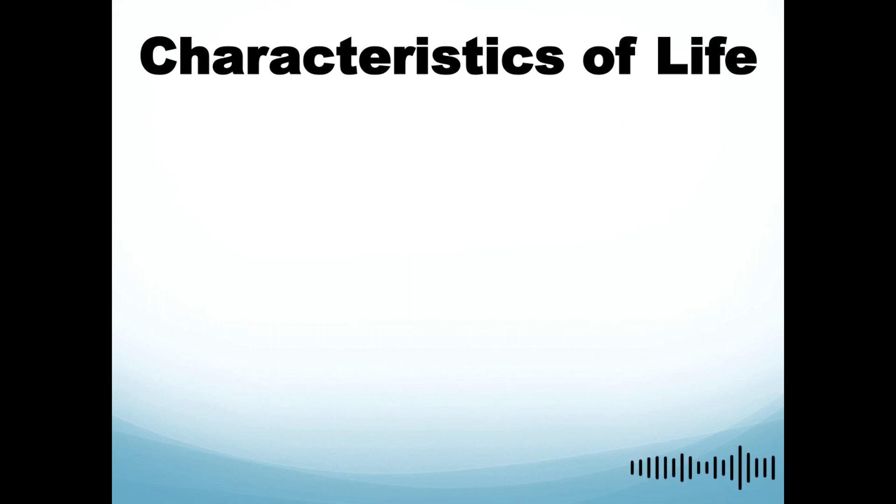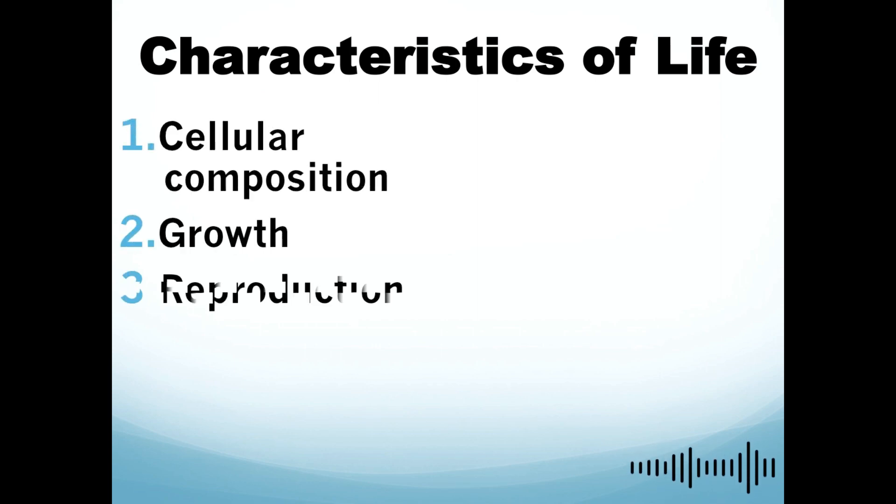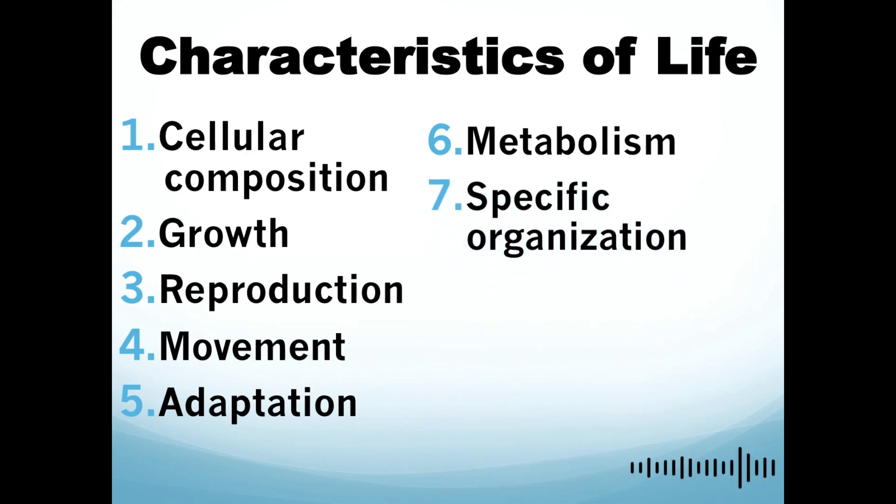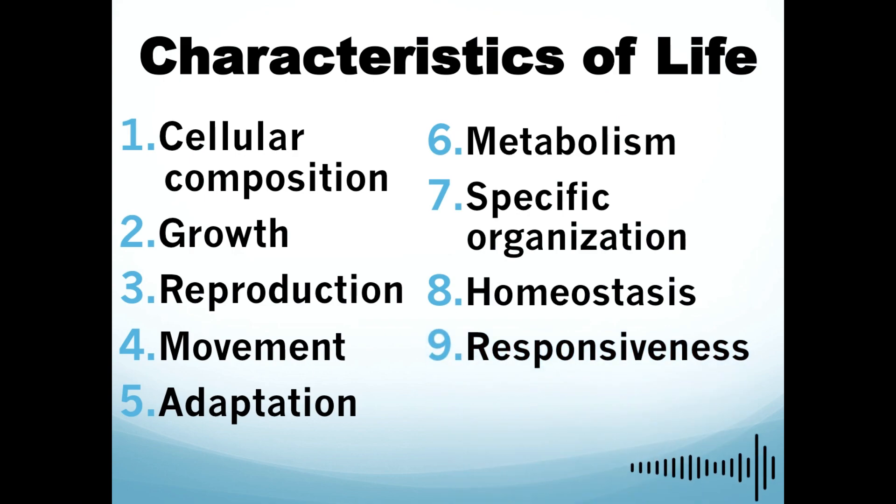Now let's proceed to some of the characteristics of life and how we'll be able to identify it. There are actually nine. The first one is cellular composition, the second is growth, the third is reproduction, the fourth is movement, adaptation is the fifth, the sixth is metabolism, the seventh is specific organization, the eighth is homeostasis, and the ninth is response to stimulus. I'll be giving you examples later on and explaining each characteristic clearly.